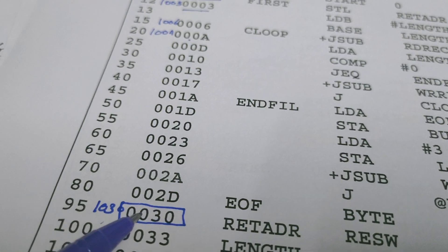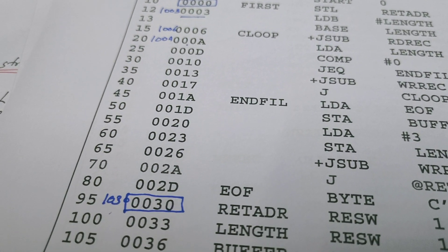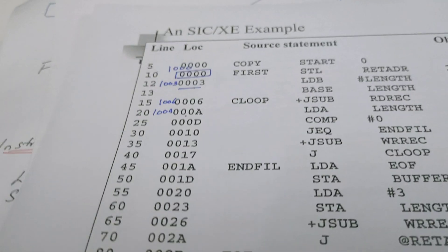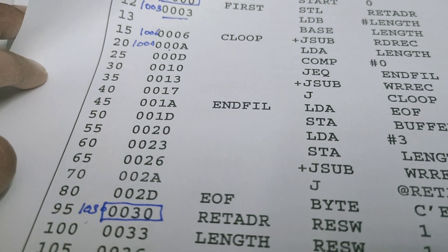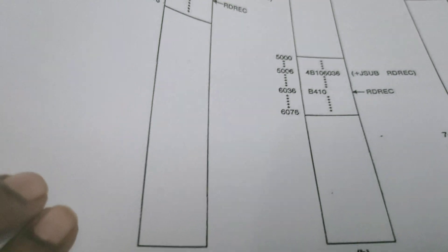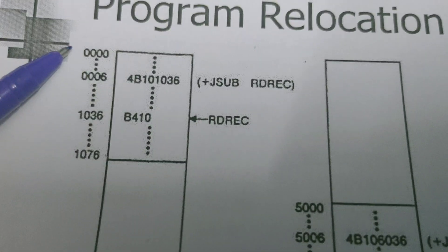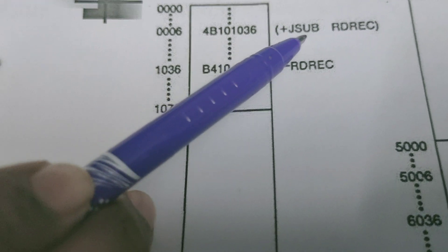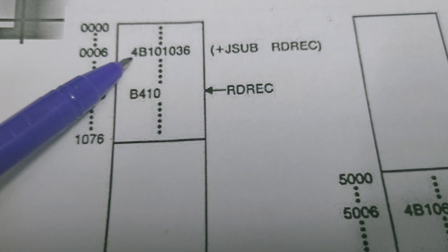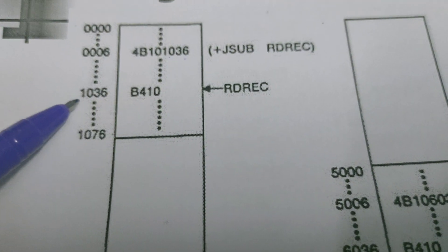That is why format 3 instructions would never be affected by relocation. Only format 4 instructions — which use absolute addressing — are affected when program relocation happens. Consider this example: at address 0x0006 there is the instruction JSUB (Jump to Subroutine) RDREC, and the corresponding object code is 4B101036, where 0x01036 is the absolute address of the label RDREC.